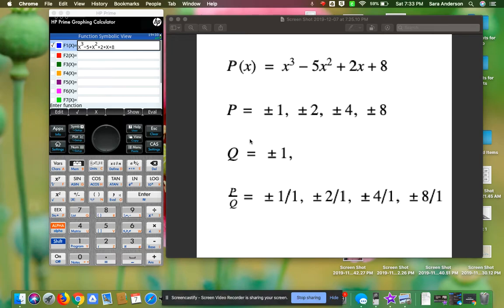Before we do that, I want you to list out the possible rational roots. We're going to do this by looking at the 8, the constant, which we'll call our p, and the 1 that we don't see in front of the x³, which we'll call our q.